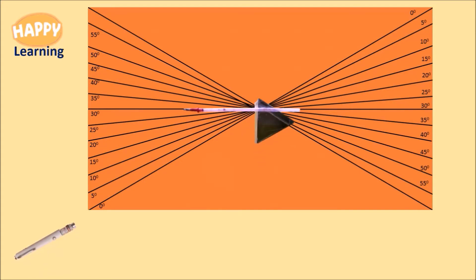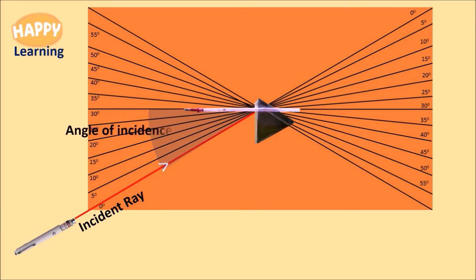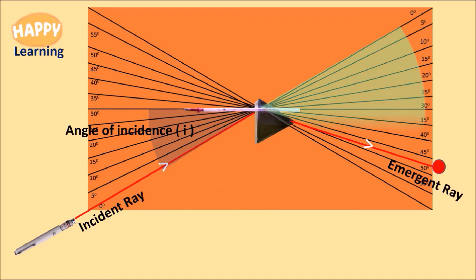Take a prism and fix an empty ballpoint refill as a pointer. Place this prism on the chart we have prepared, so the laser is placed along the diagonal from 0 to 0. The angle between the incident ray and the normal is the angle of incidence. After passing through the prism, the ray bends and comes out as an emergent ray.